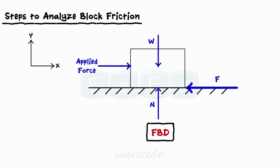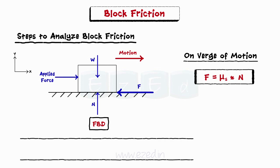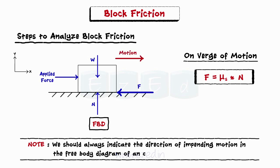And the applied forces. Remember that the direction of frictional force is always directed opposite to the direction of impending motion. When the block is on the verge of motion, friction force is equal to the product of the coefficient of static friction and the normal reaction. Remember that we should always indicate the direction of impending motion in the free body diagram of an object under the influence of friction.